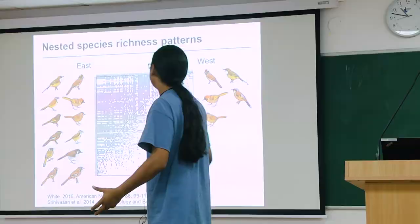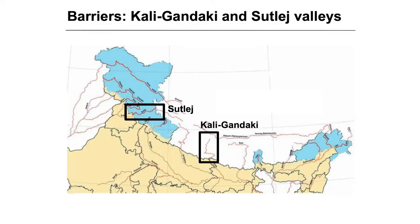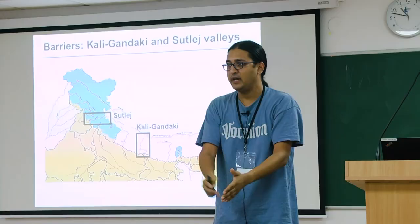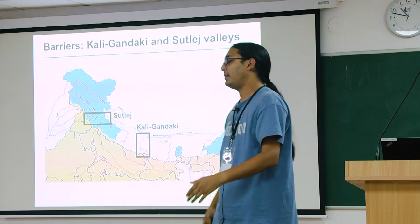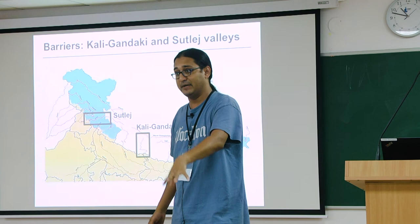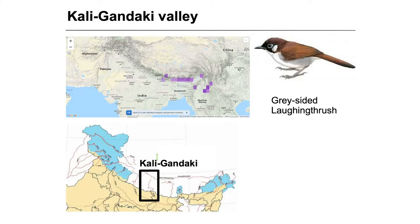In the Himalayas, there are two river valleys that are large biogeographic barriers — not easy to cross. The Kali Gandaki in central Nepal and the Satlaj river valleys are very deep gorges, and movement across them is very limited and difficult. For many species, distribution ranges end at the Kali Gandaki valley. The Grey-sided Laughingthrush is found in the Eastern Himalayas and Southeast Asia, but its distribution stops at the Kali Gandaki. Similarly, the Blue-winged Minla does not extend beyond the Satlaj.